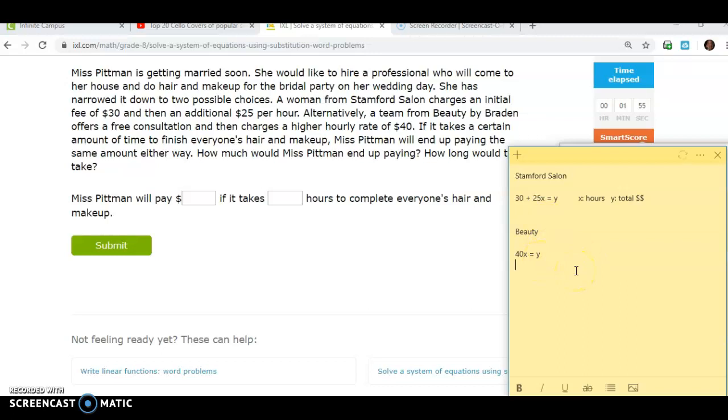Alright, so now I can use what I know about substitution method instead of graphing it. It's saying how much would Ms. Pittman end up paying and how long would it take if she's going to pay them the same amount no matter what. So basically I want to, I'm trying to figure out the solution. When will they be the same? So for me, I'm going to choose the easier one here. Since both of them are Y equals, remember, you take the expression and plug it into the other. So I'm going to take this 40X from the Beauty equation and I'm going to plug it in over here to this Y value. So I'm going to take Stanford Salon, which is 30 plus 25X equals, and I'm going to go ahead and take this guy right here. And instead of Y in the Stanford Salon, I'm actually going to go ahead and paste the Beauty one in there.